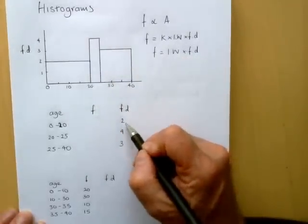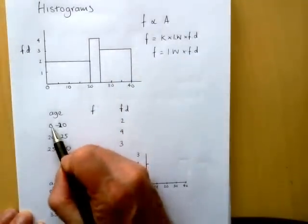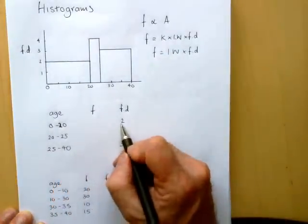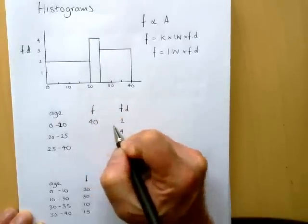So what are these frequencies then? Well, we've got the frequency density of 2. And it's fairly simple without doing maths, writing it out. 0 to 20 has a width of 20. So 20 times 2 is a frequency of 40.